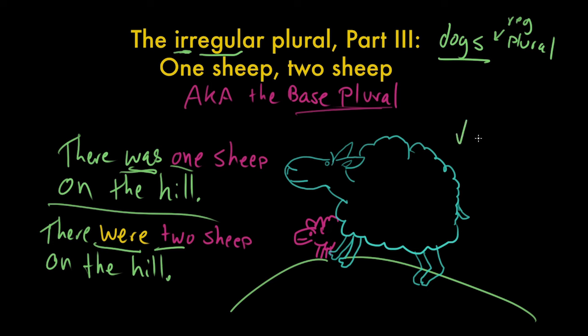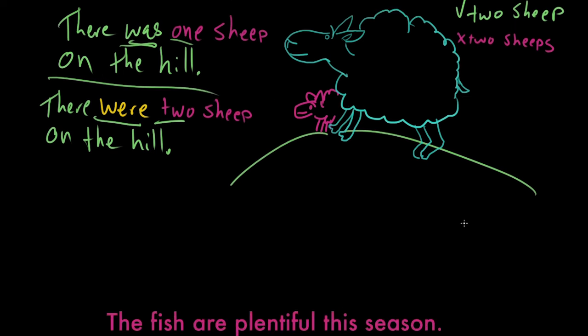In standard English, the form is 'two sheep' and not 'two sheeps.' Now, there are more words that do behave this way, so let's go investigate. There are a small number of words that also behave this way — the way sheep does — these weird sheep plurals, these base plurals.